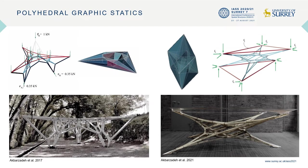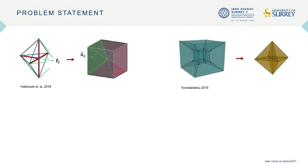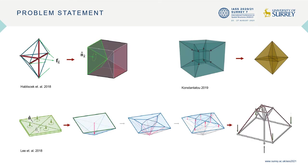The polyhedral graphic statics has shown potentials for form-finding and design of spatial structures. A handful of computational techniques can generate the dual diagram given the primal, or provide algorithms for manipulations of form and force diagrams. However, existing computational implementations either only work with closed cells or self-stressed networks, or they are a form-finding process where a designer starts with the global force diagram representing external equilibrium, then modifies the force diagram and finds a form at the final stage.